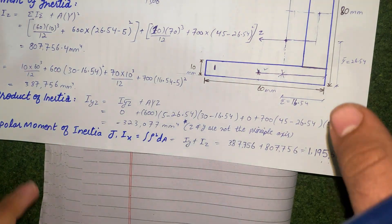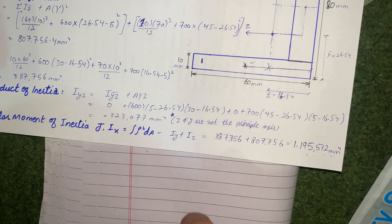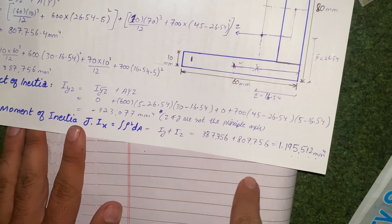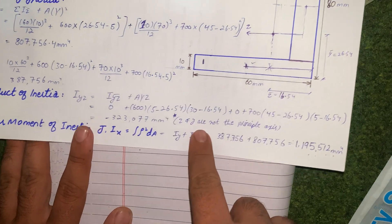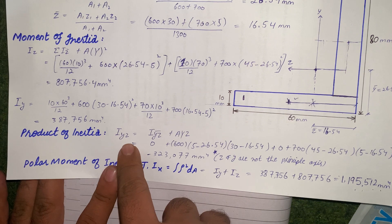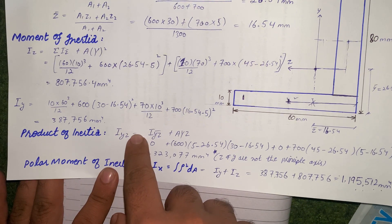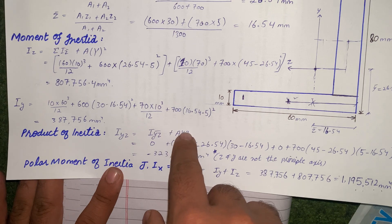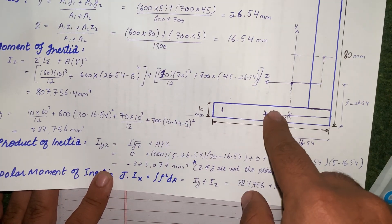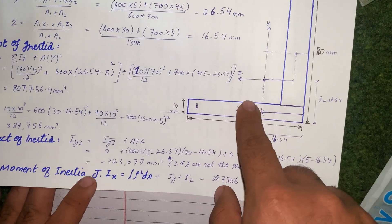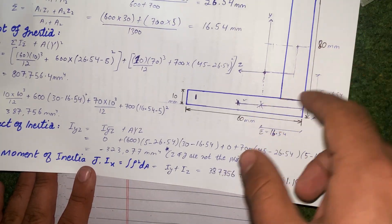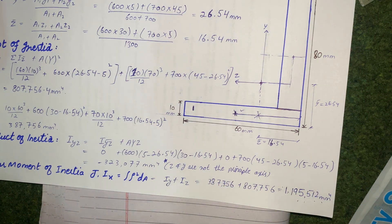Now comes the main point: product of inertia. This is a section where many students get confused — specifically about why we subtract a larger value from a smaller one. The product of inertia formula about centroidal axes is Iyz = Σ(Iyz_individual + A·y·z). We apply this individually for both rectangles.